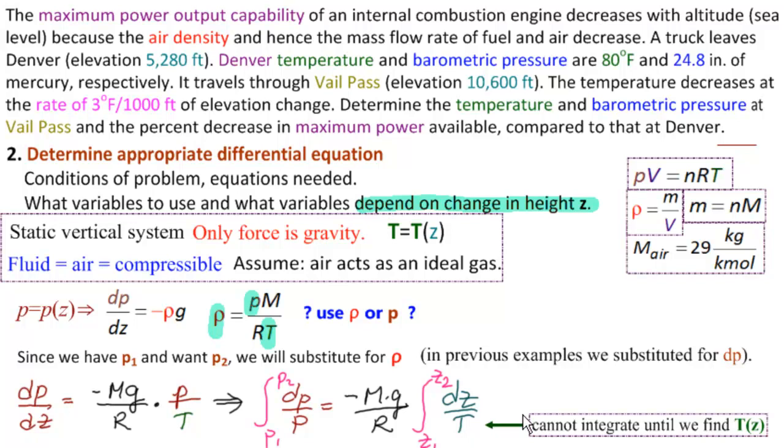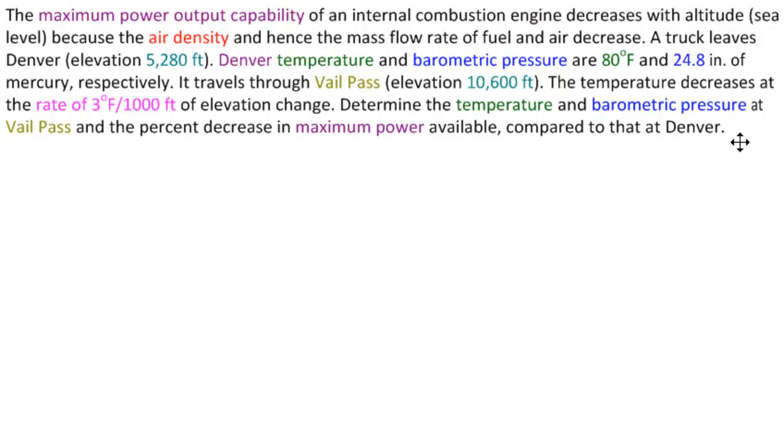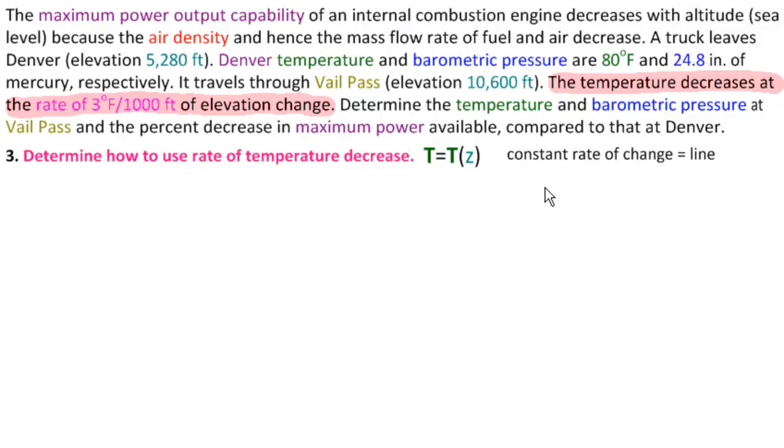Step three. So now we are up to part three in our solution. Part three is to determine how to use the rate of temperature decrease. Remember we have that the temperature decreases at a rate of 3 degrees Fahrenheit for 1,000 feet of elevation change. This is a constant rate of change, so that means that t of z is a line. And this rate here is the slope of the line, and when we did our change of units we found that that was minus 0.00547 Kelvin per meter elevation change.